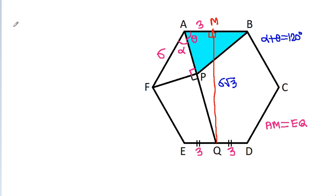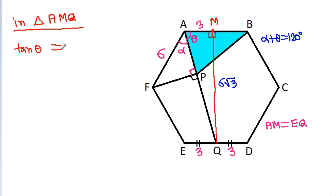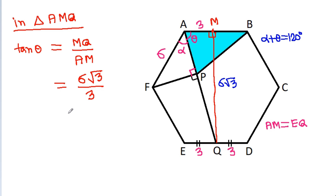Now, in triangle AMQ, tan theta will be equal to MQ divided by AM. MQ is 6√3 and AM is 3. So tan theta equals 6√3 divided by 3, and 3 times 2 is 6. Therefore, tan theta equals 2√3.